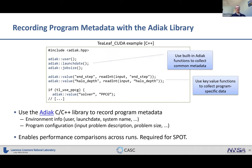ADIAC is a C and C++ library for recording program metadata. It has built-in functions to collect common metadata like username, launch date, and MPI job size, and key-value functions for recording custom program-specific metadata — mostly the program configuration. Typically you record the launch date (required for Spot's time-based displays), MPI job sizes, usernames, number of OpenMP threads, all program configuration options, and global performance metrics like a figure of merit or total runtime.